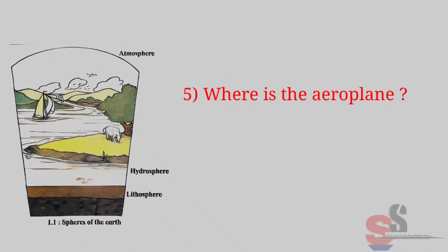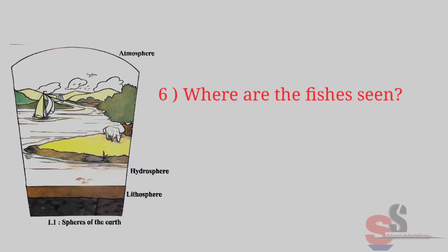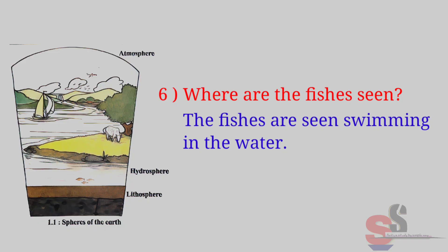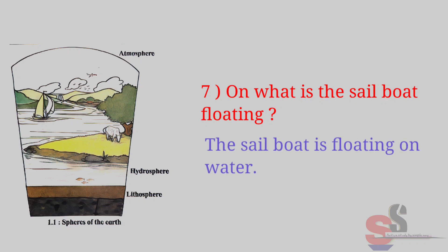5. Where is the aeroplane? Answer: The aeroplane is in the sky. 6. Where are the fishes seen? Answer: The fishes are seen swimming in the water. 7. On what is the sailboat floating? Answer: The sailboat is floating on water.